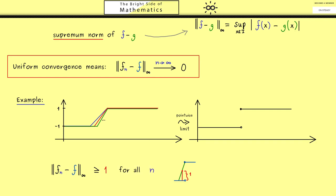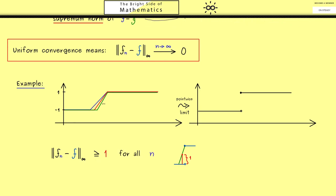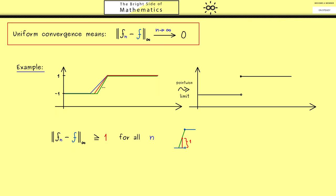Now this simple example without much calculation directly gives us the following result: having the pointwise convergence does not tell us that we also have the uniform convergence. However, it's also a nice result and not hard to show that we have the other implication. Hence, the uniform convergence is indeed stronger than the pointwise convergence.